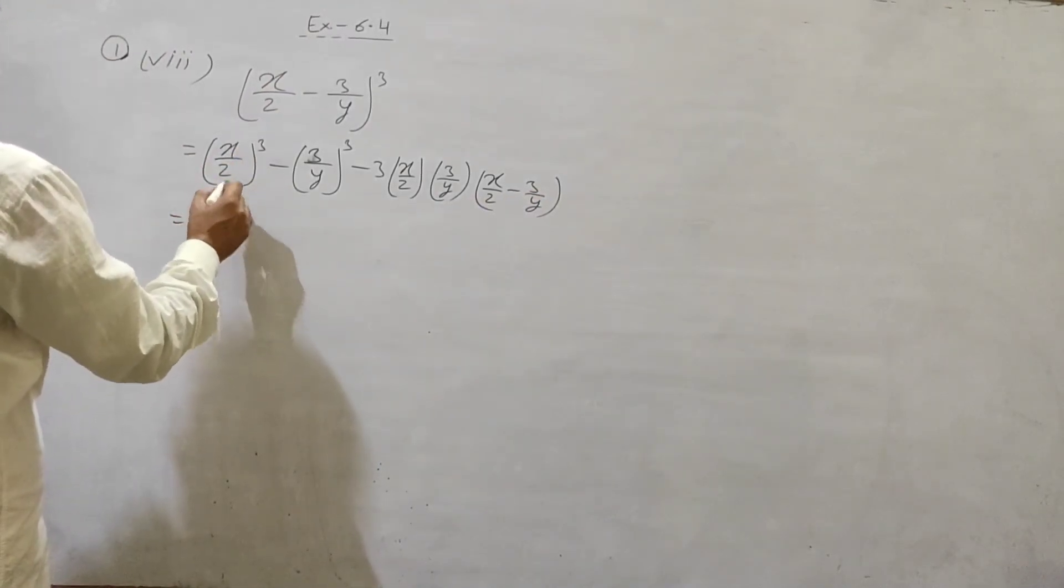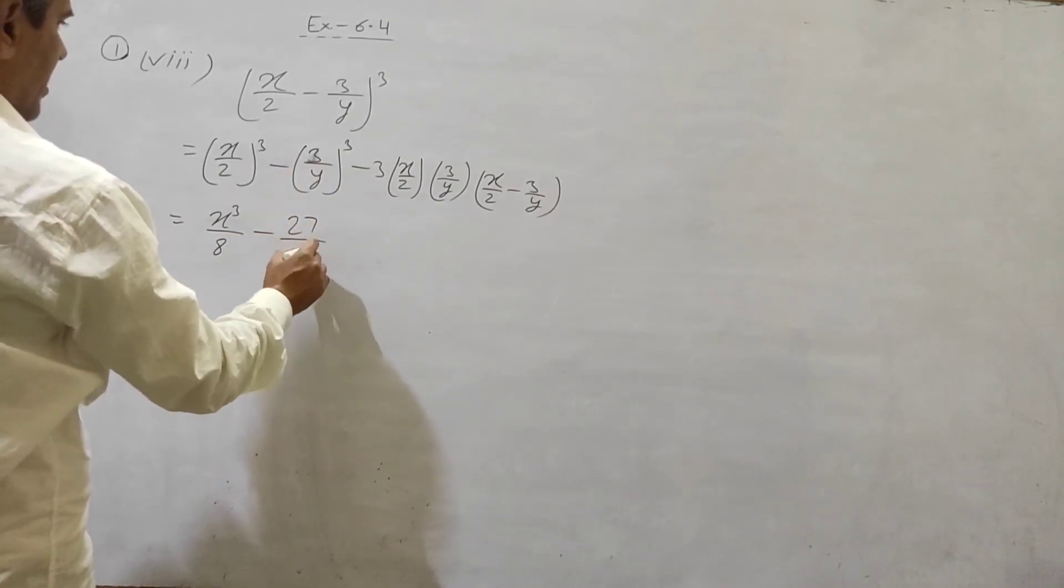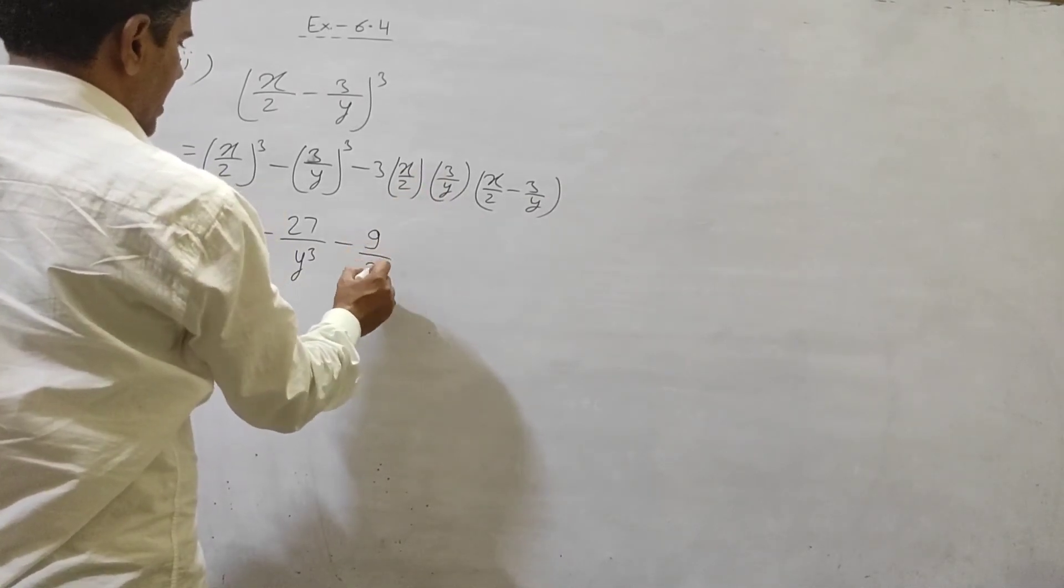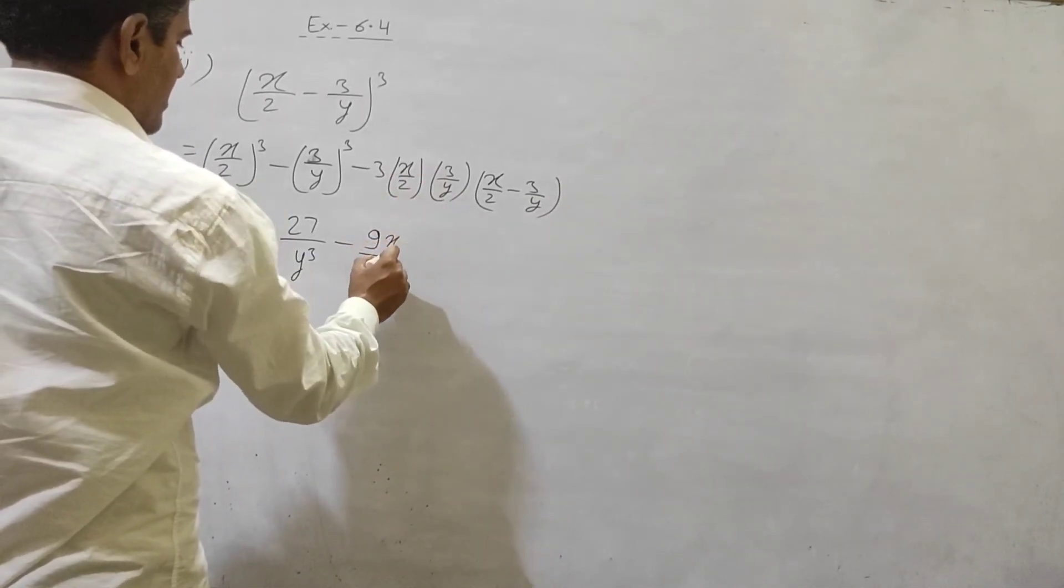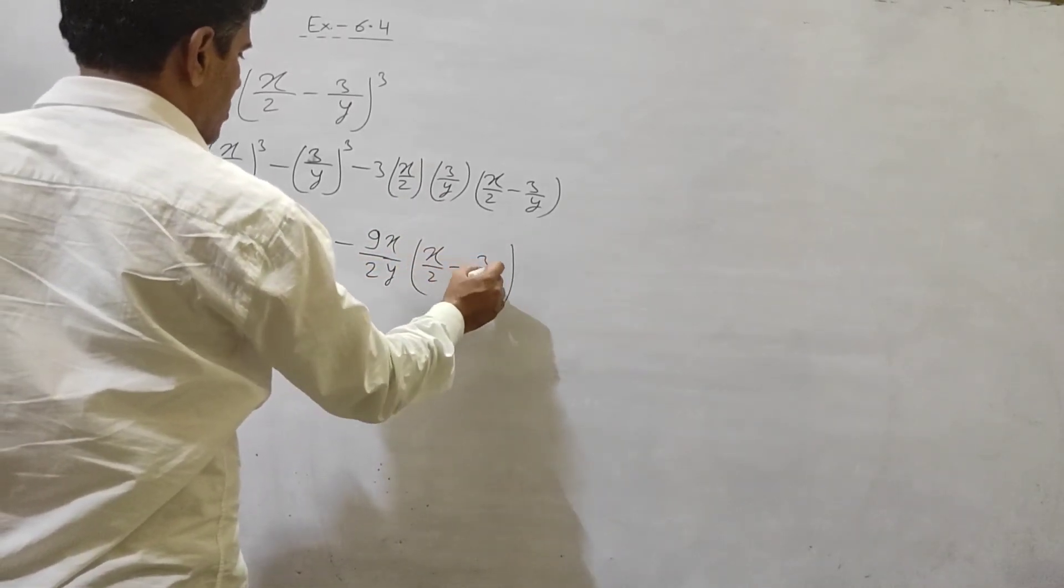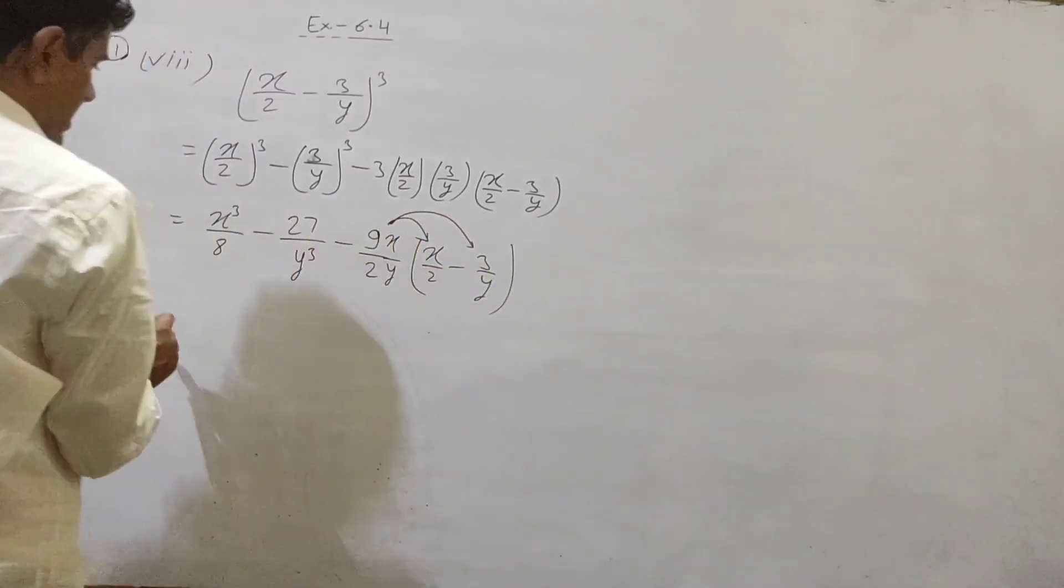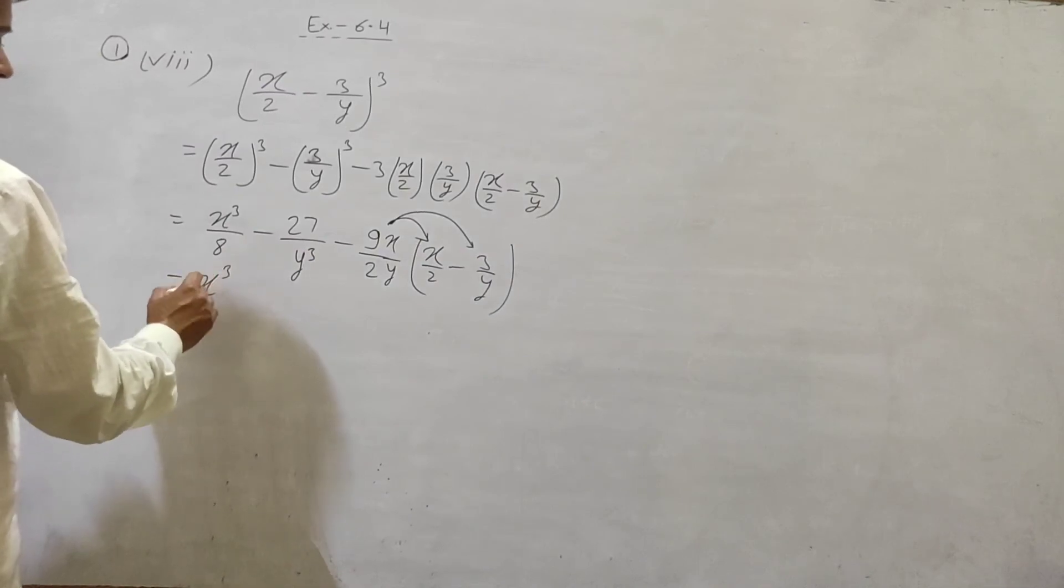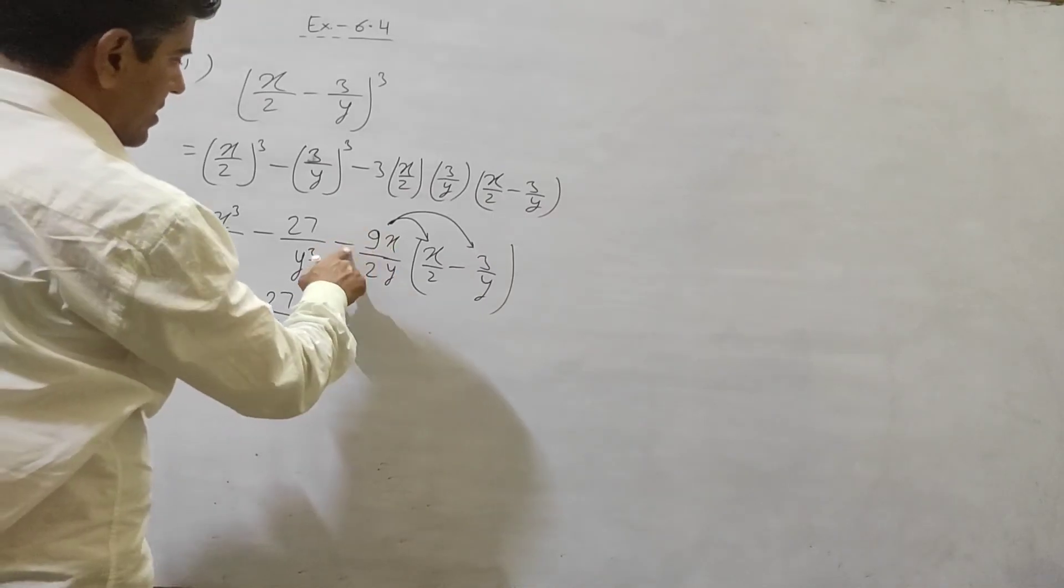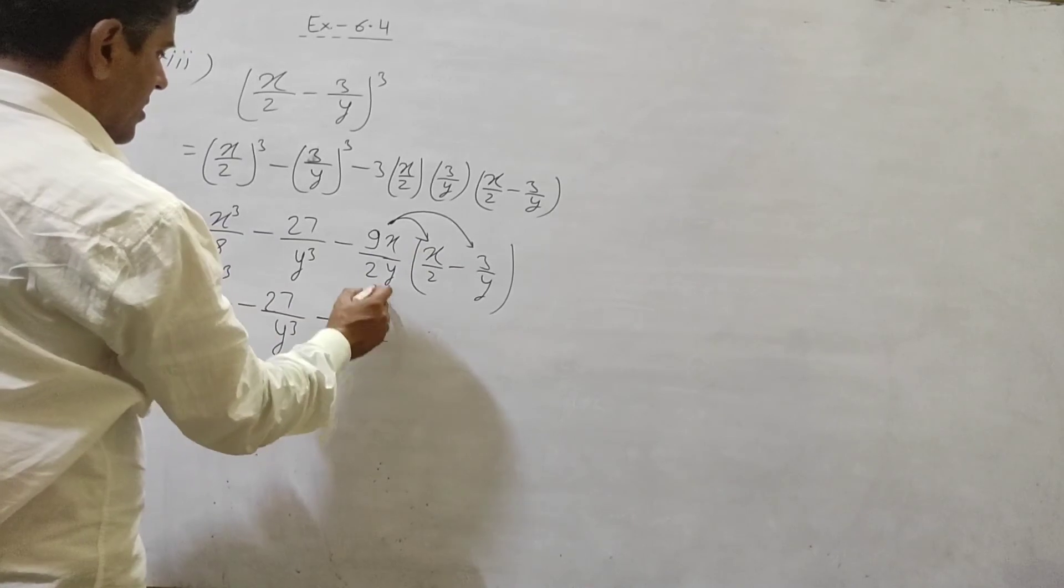x cube, x cube, 2 cube, 2 cube, 2 2 2 8 ho jayega. 3 cube 27 by y cube. Now 3 multiply 3, 9 by 2 x by y. First multiply first then multiply combined x cube by 8 minus 27 by y cube.